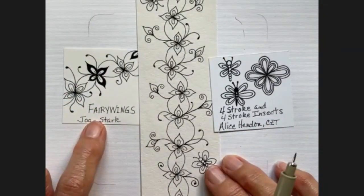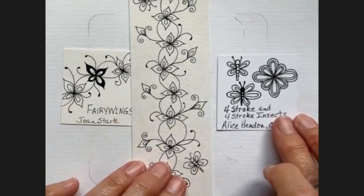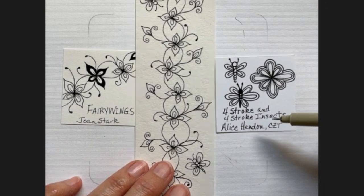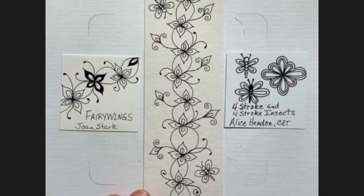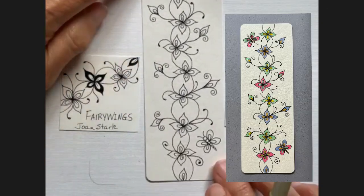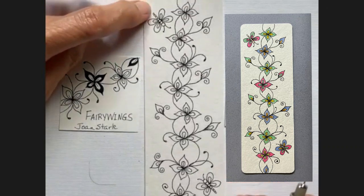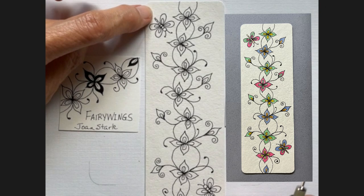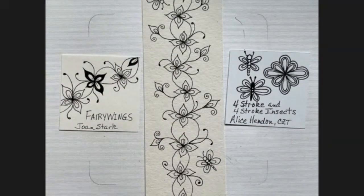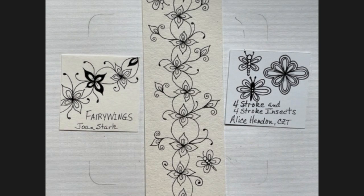So that was Fairy Wings and Four-Stroke Insect by Alice Hendon. And I hope you enjoyed that. Simple, easy. And I'll probably go in and add some color to this. And maybe I'll show both versions of it when I'm done. Thanks again for watching me. Another short, simple video for you. I hope you have had a great weekend. Have a great week. Stay safe. And I will see you next time. Thanks again. Bye.